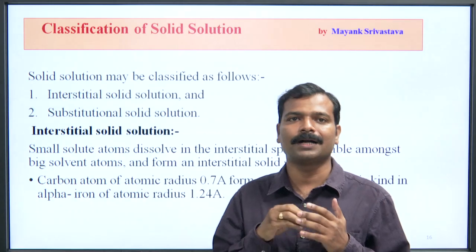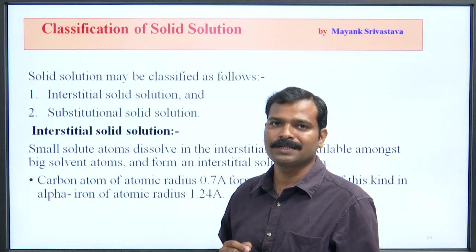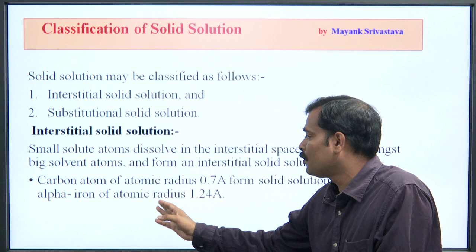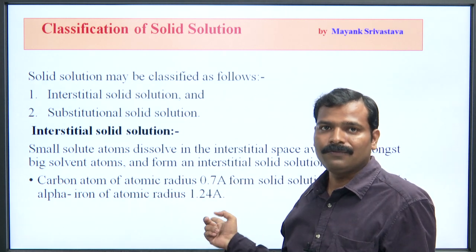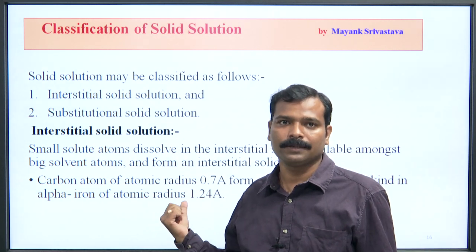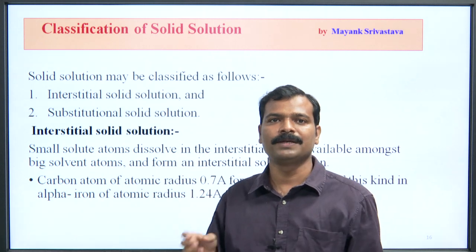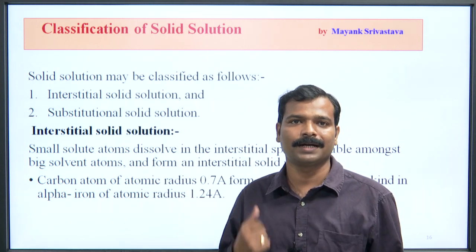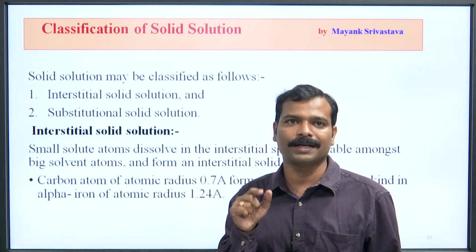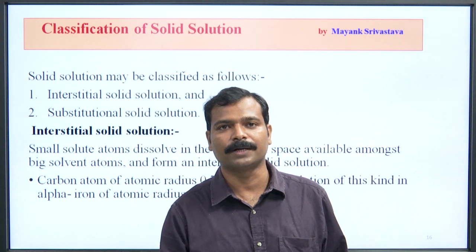Example: carbon atoms of atomic radius 0.7 Angstrom form a solid solution in alpha iron of atomic radius 1.24 Angstrom। Alpha iron में carbon की content मिला रहे हैं — iron base metal है और carbon alloying material है। Carbon का radius कम है और वो intersecting point पर अपना space बनाता है, इसलिए यह interstitial solid solution है।